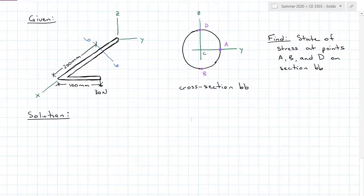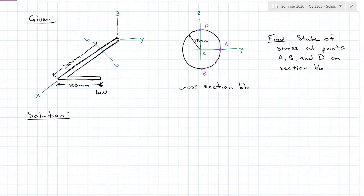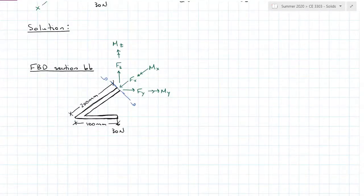In the second example, we have a bent solid bar with a 30-newton load acting at 100 millimeters off the corner. The bent bar acts entirely in the X-Y plane and has a radius of 15 millimeters. Find the state of stress at points A, B, and D. Just like the last problem, I first find the internal forces at section BB by drawing a free body diagram of the cantilevered end. I have three translational forces — Fx, Fy, and Fz — and three moment forces — Mx, My, and Mz — all acting in the positive direction.